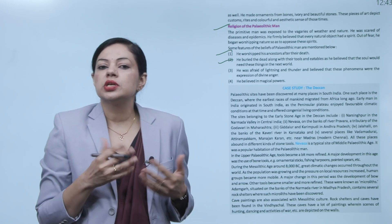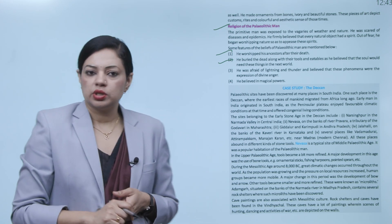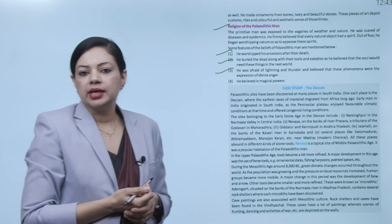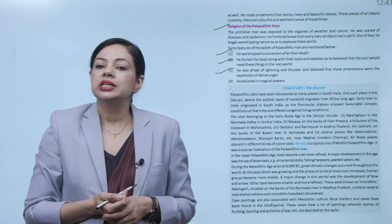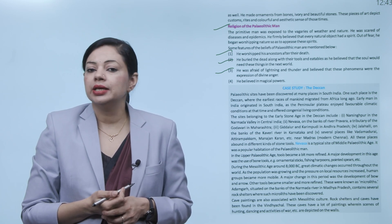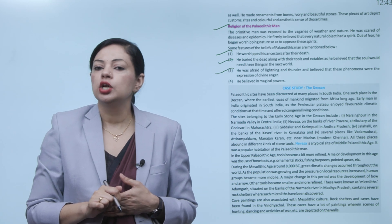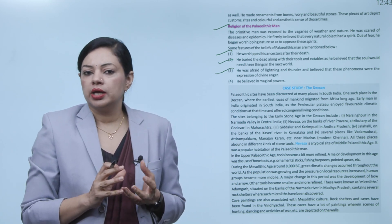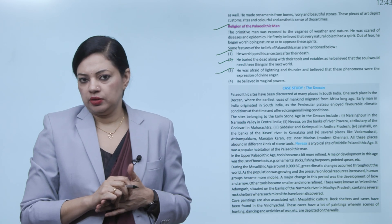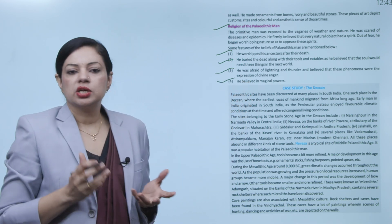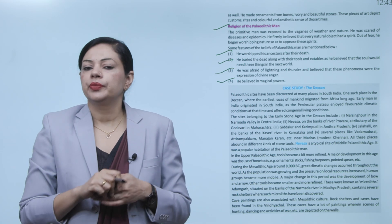Next, he was afraid of lightning and thunder and believed that these phenomena were the expression of divine anger. They were afraid when lightning flashed or storms came. They thought maybe God has become displeased with us. Next, he believed in magical powers.